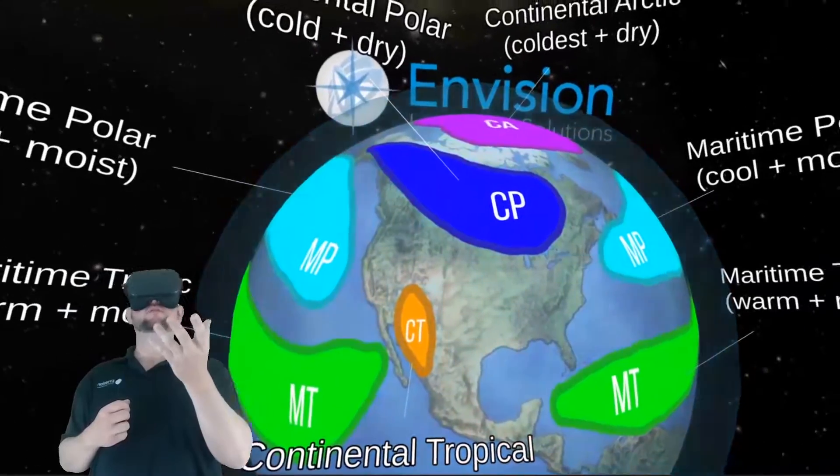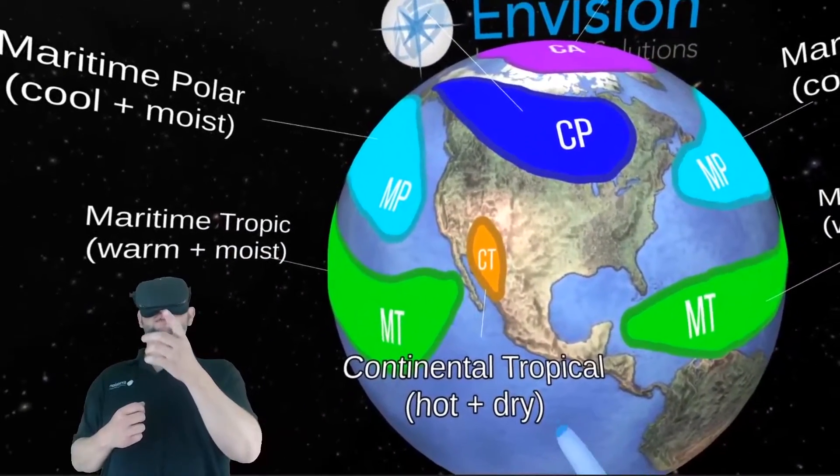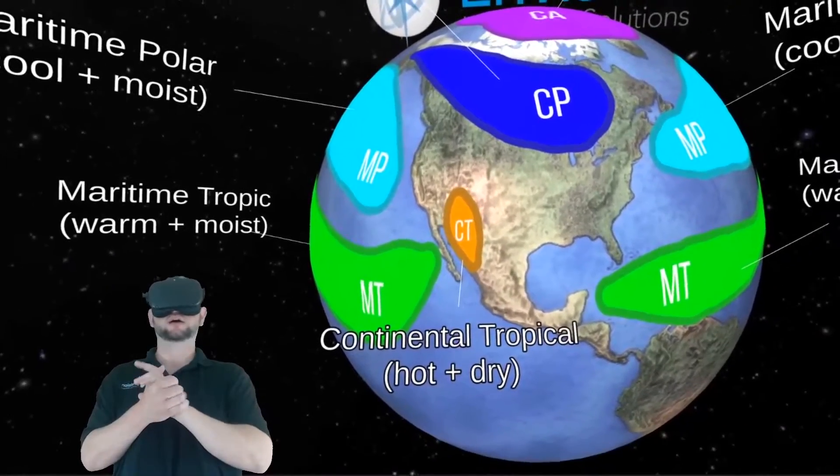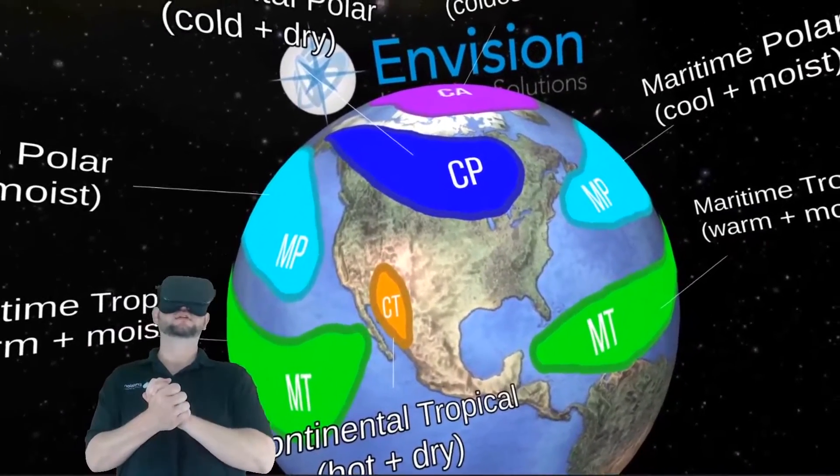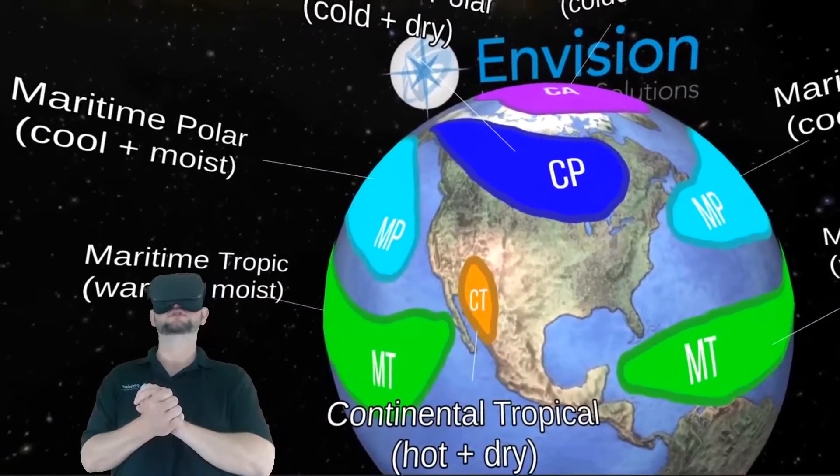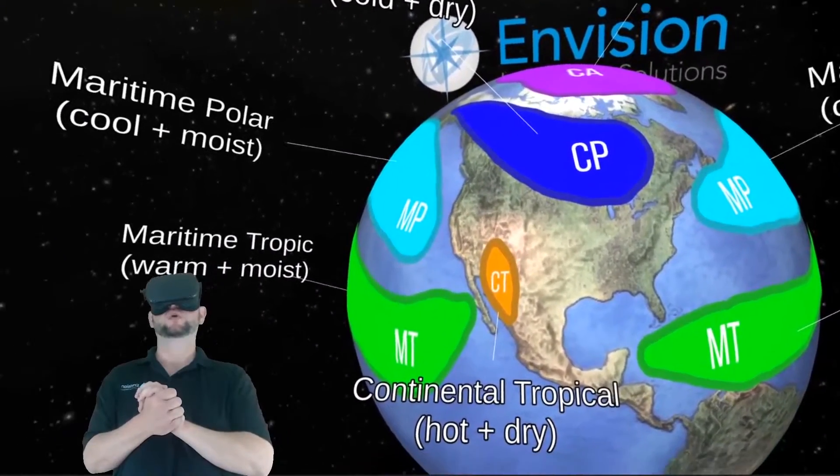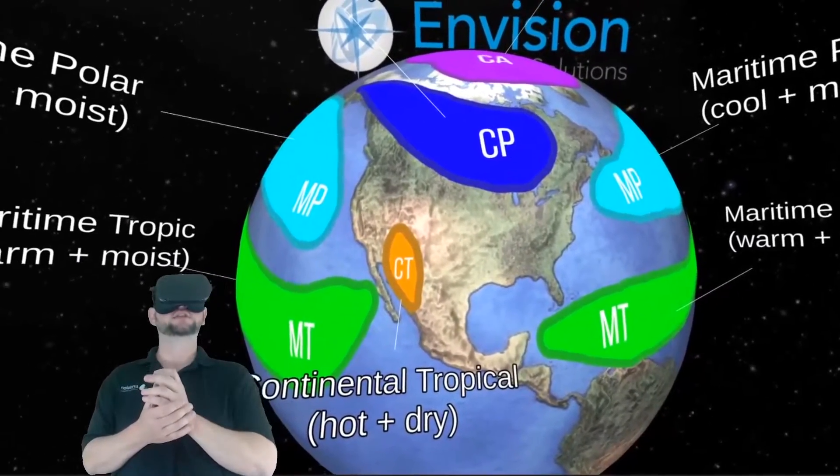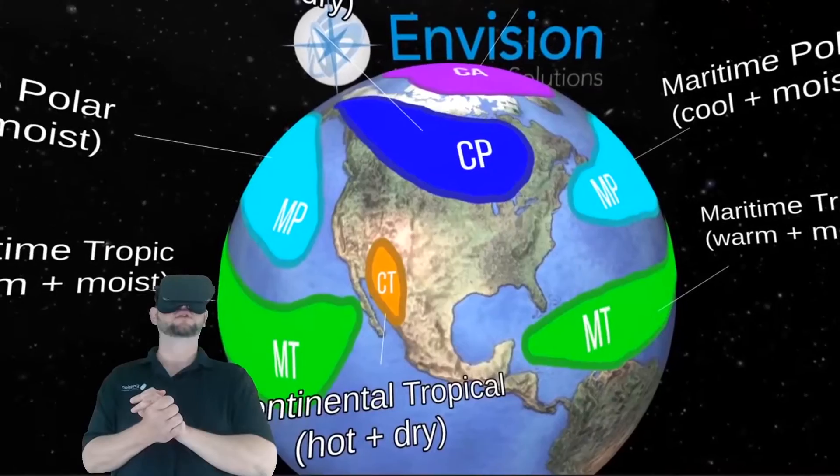Going south below the polar air masses, you have continental tropical. And that's really the only continental tropical climatology in the whole continent of North America in that southwest US and northern western Mexico area. And that's going to be some of your hottest and driest air mass on our continent.